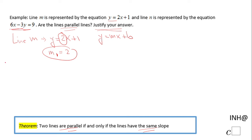We're going to do something similar for line N. Now be careful, this equation is given in the standard form 6X minus 3Y equals 9. So for finding the slope we need to solve for Y. I'm going to subtract 6X here first.